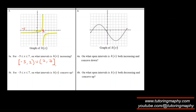Where is h concave up? Concave up is a smiling face. Only one portion appears to be a smiling face — the other is clearly a frowning face. So the concave up interval is from negative 5 to 2. Since 2 is a vertical asymptote and not part of the domain, it must be excluded, giving us the open interval negative 5 to 2.